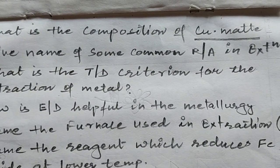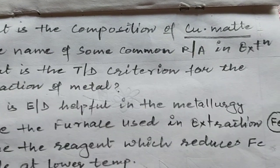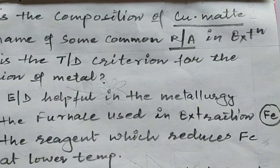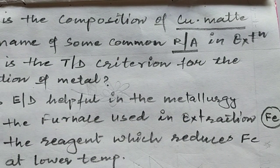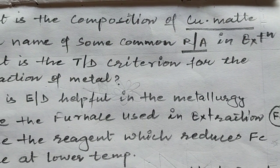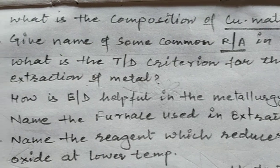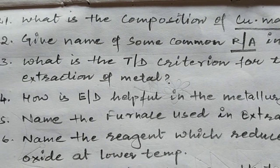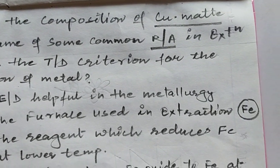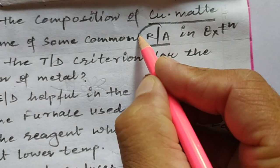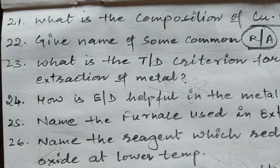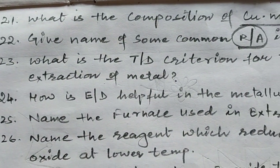Give the name of the common reducing agent. Where do you find the reducing agent? The reducing agent is found in the Ellingham diagram. You can be asked a question from the Ellingham diagram. The reducing agent is used for explaining some common reduction processes.